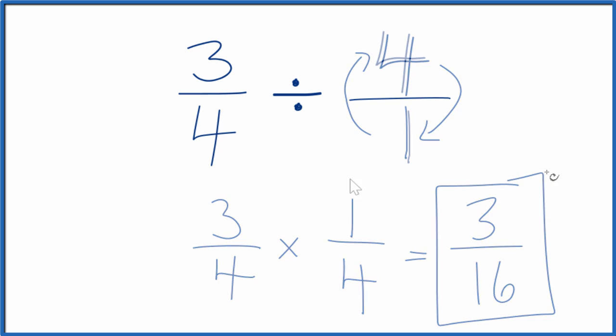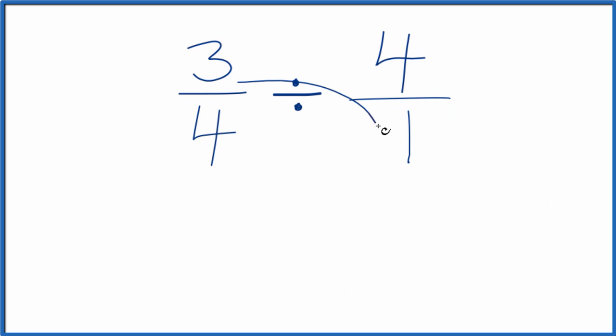There is another way we can do this. We can take three times one, that's three, and four times four, that's 16. And we end up with three-sixteenths. And this is what we found before. We're really just multiplying by the reciprocal again. This is just a little quicker method.